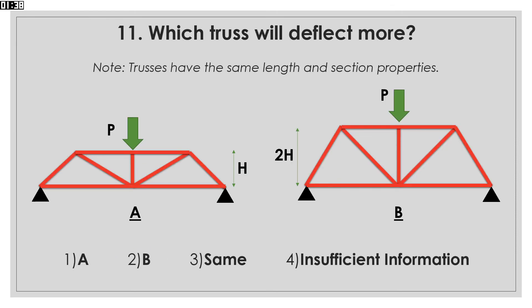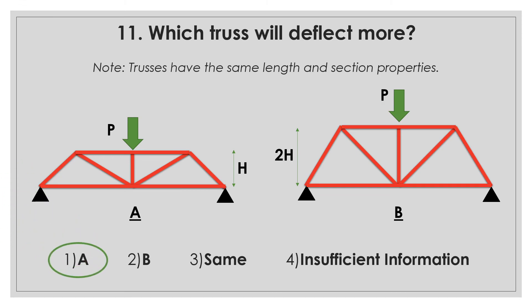Which truss will deflect more? We have two trusses with the same length and section properties; however, truss B is deeper than truss A. Like beams, the deeper trusses will have more stiffness and will deflect less under vertical loads.